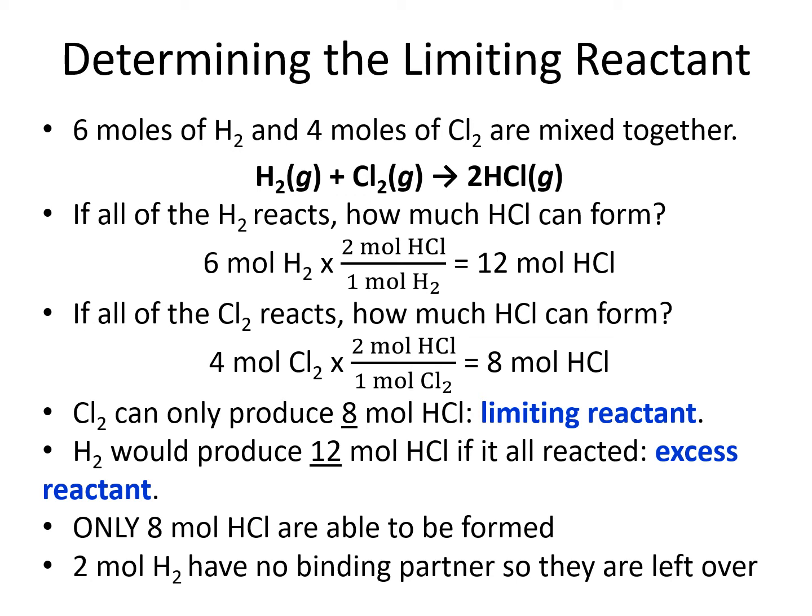If all the hydrogen reacts, 6 moles of hydrogen would be reacting. From the balanced equation, we know that 2 moles of HCl could be produced from each mole of H2 put into the reaction. Moles of H2 goes on the bottom to cancel out and moles of HCl goes on the top, then we fill in the coefficients from the balanced chemical equation. 6 times 2 tells us that we could get 12 moles of HCl if all of the hydrogen reacts.